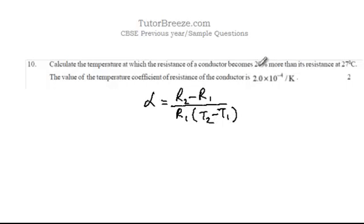The question says the resistance becomes 20% more than the resistance at 27 degrees Celsius. Since this is given as per Kelvin, we will change this temperature from Celsius to Kelvin. Let us assume that the original resistance R1 at 27 degrees Celsius is 100.